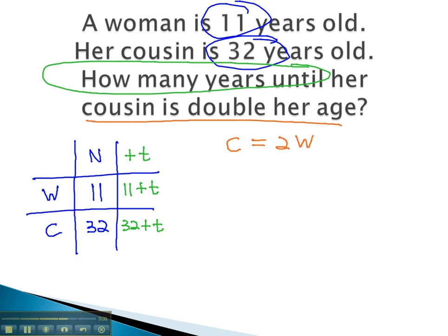We can now replace the parts of this equation with what they were in our table. The cousin in the future is 32 plus t. Equals 2 times the woman, who in the future was 11 plus t.